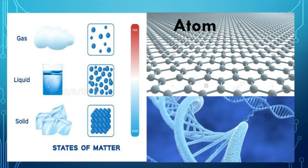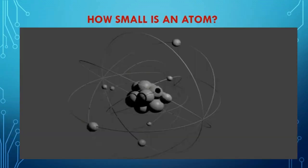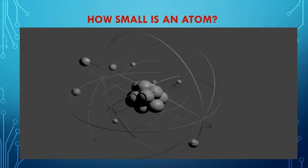We already know that anything that has definite mass and occupies space is known as matter. If somehow we could go on dividing any piece of matter, we will get smaller and smaller particles until we reach the smallest particle, which cannot be divided further. These smallest particles can be atoms, molecules or ions. Atoms are the building blocks of matter.